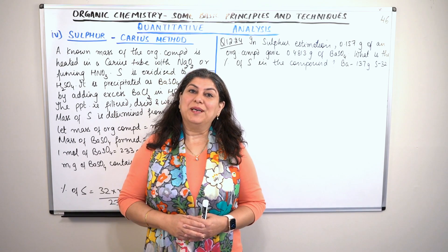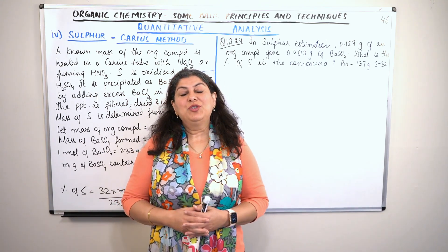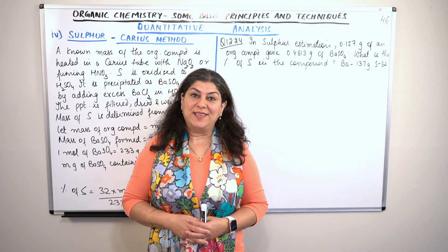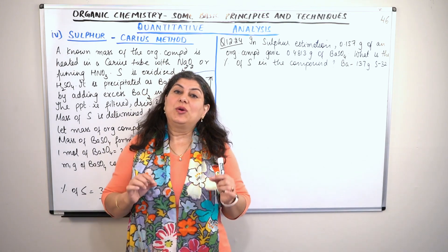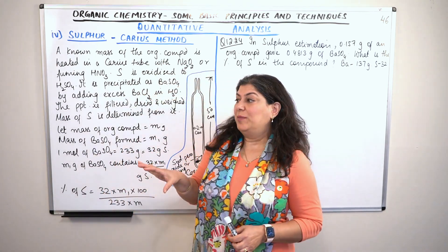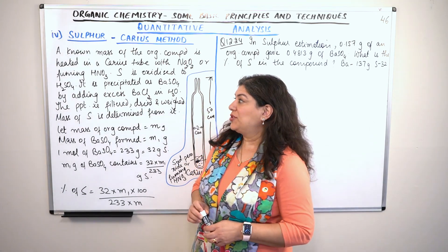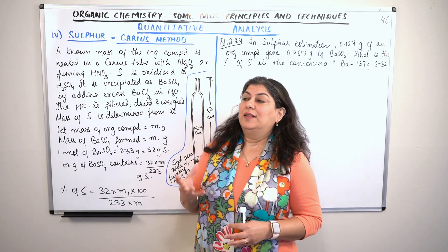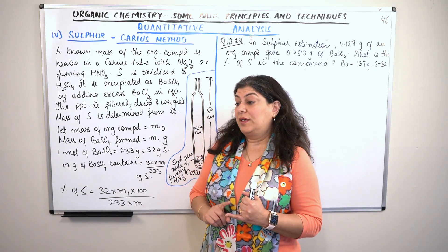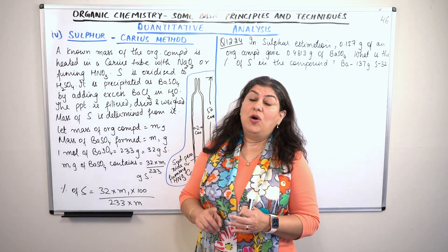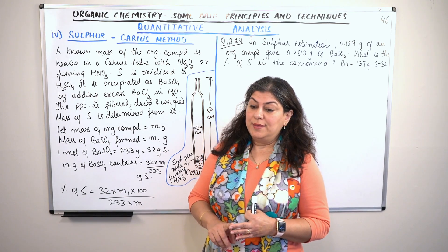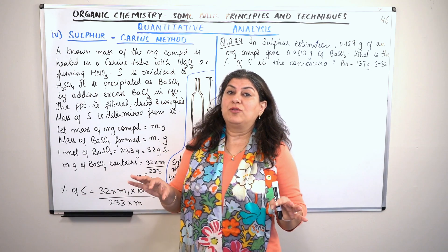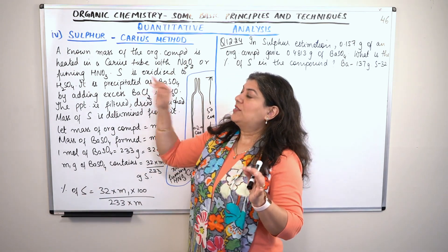Hello, I'm Seema and welcome to part 46 of the chapter Organic Chemistry: Some Basic Principles and Techniques. We were doing the quantitative analysis of elements present in organic compounds, and till now we have studied how we analyze the quantity of carbon, hydrogen, nitrogen, and the halogens. In this video I'm going to start talking about the estimation of sulfur.